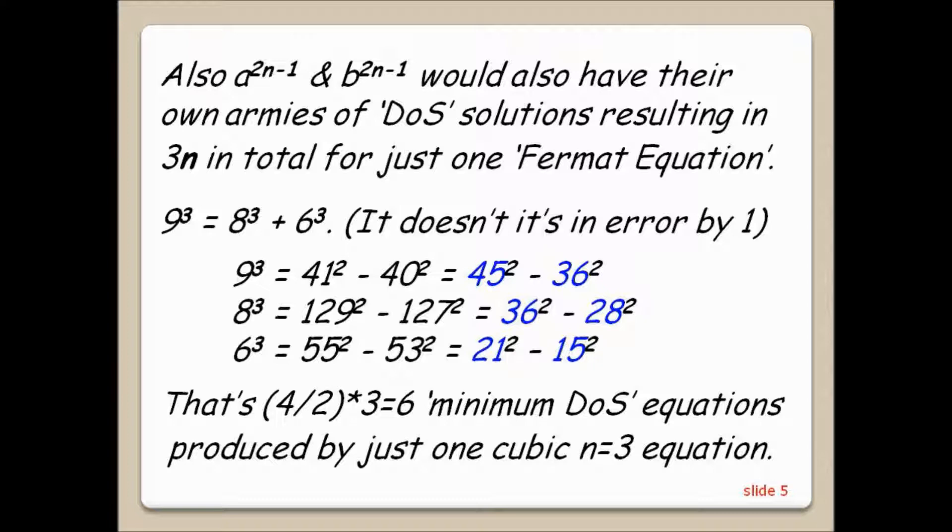9 cubed equals 8 cubed plus 6 cubed. It doesn't. It's in error by one. 9 cubed equals 41 squared minus 40 squared equals 45 squared minus 36 squared.